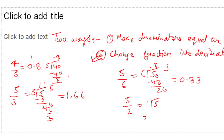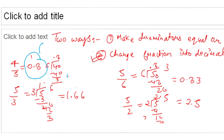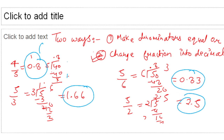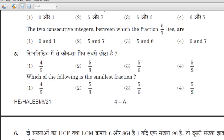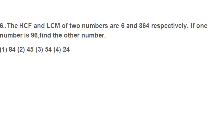Your last fraction is 5 by 2, which gives 2.5. Comparing the decimals: 0.8, 1.66, 0.83, and 2.5 — the smallest is 0.8. So the smallest fraction is 4 by 5. Your answer is 4/5.